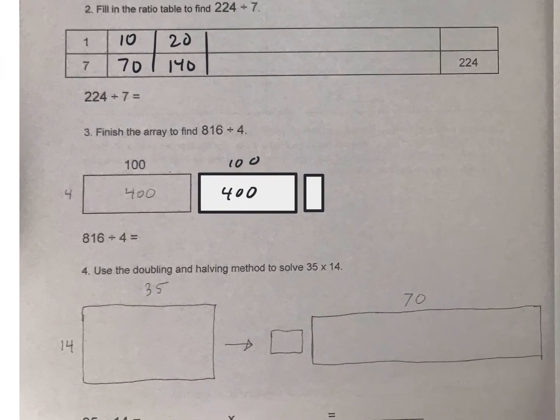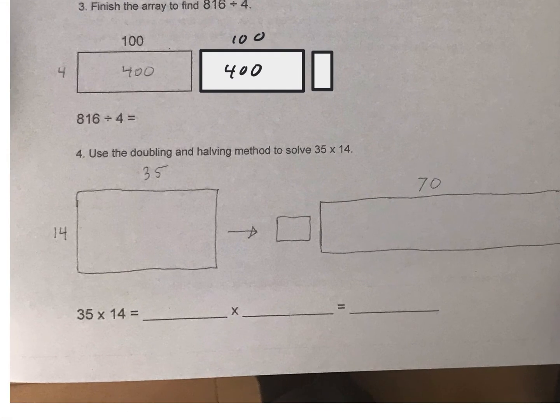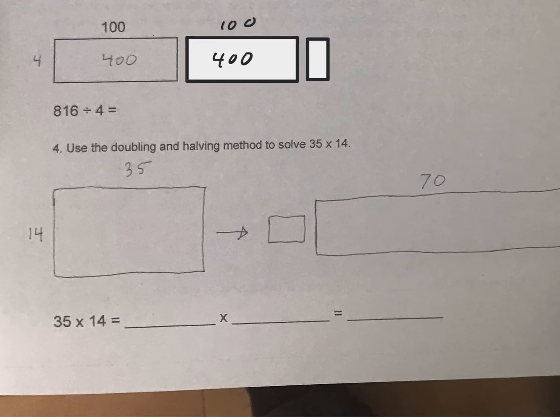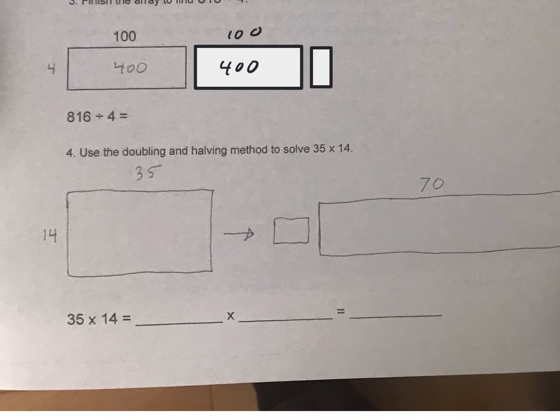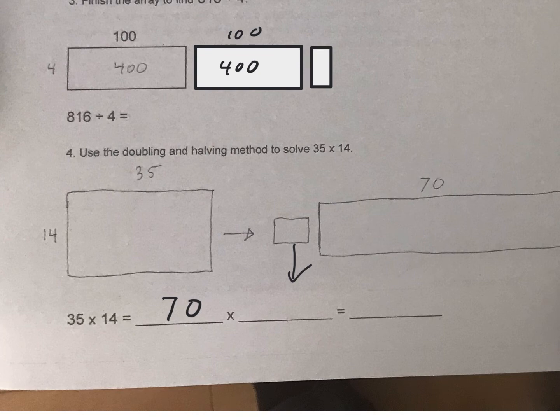Now for problems 4 and 5 we're looking at different methods. This is doubling and halving. So if 35 is doubled to 70, 14 needs to be halved. So what is half of 14? And then you're going to have 70 and then whatever is in here. And then you should be able to solve that in your head when you get over here.